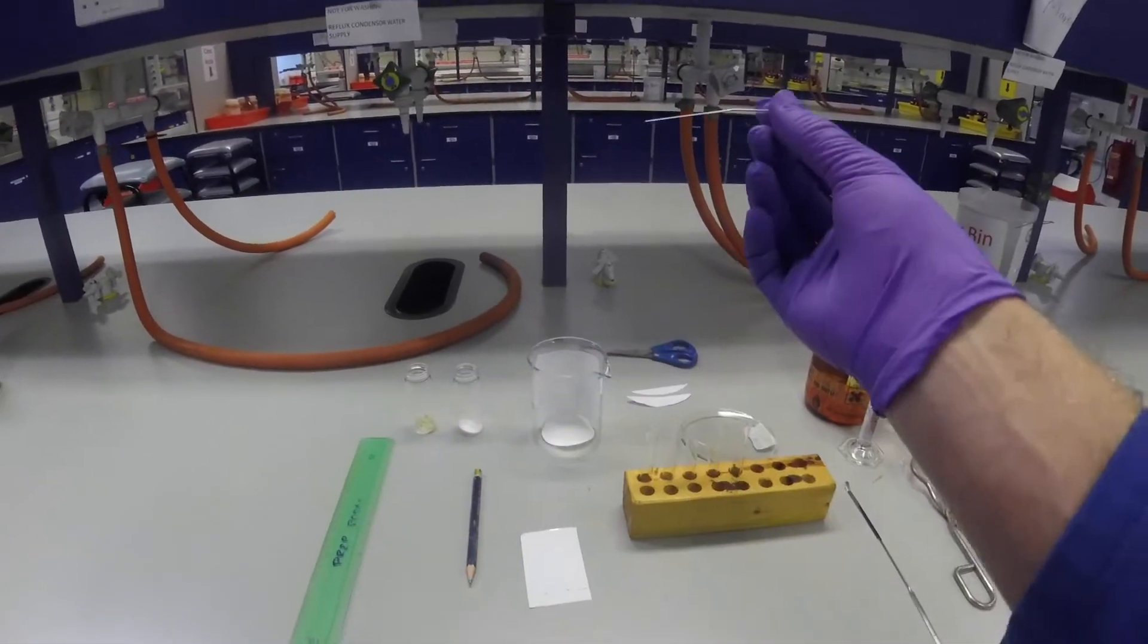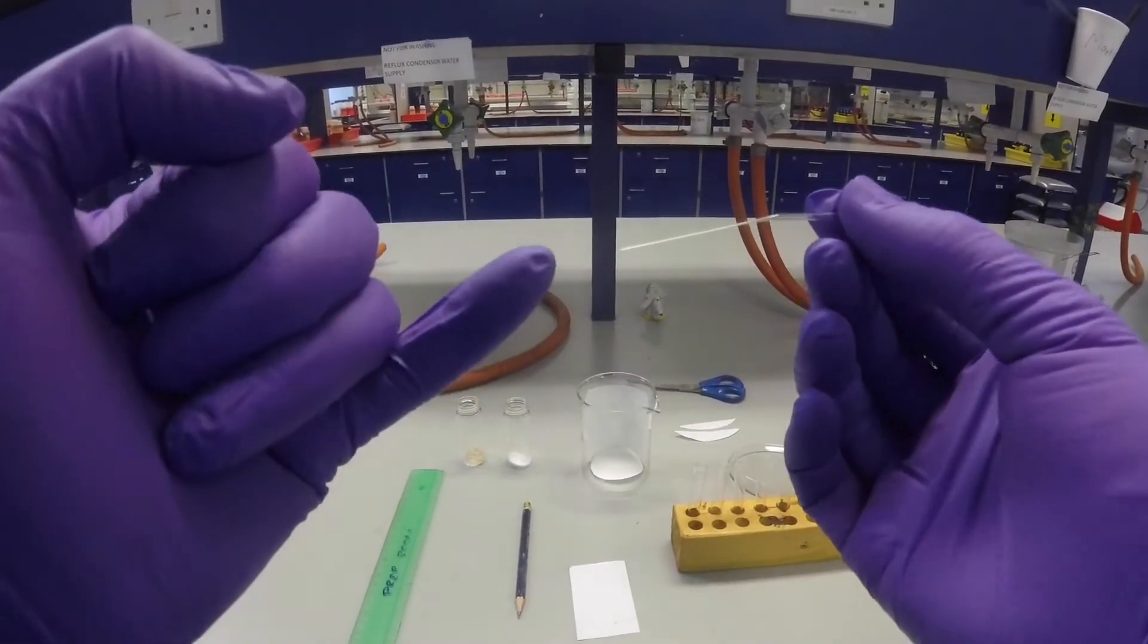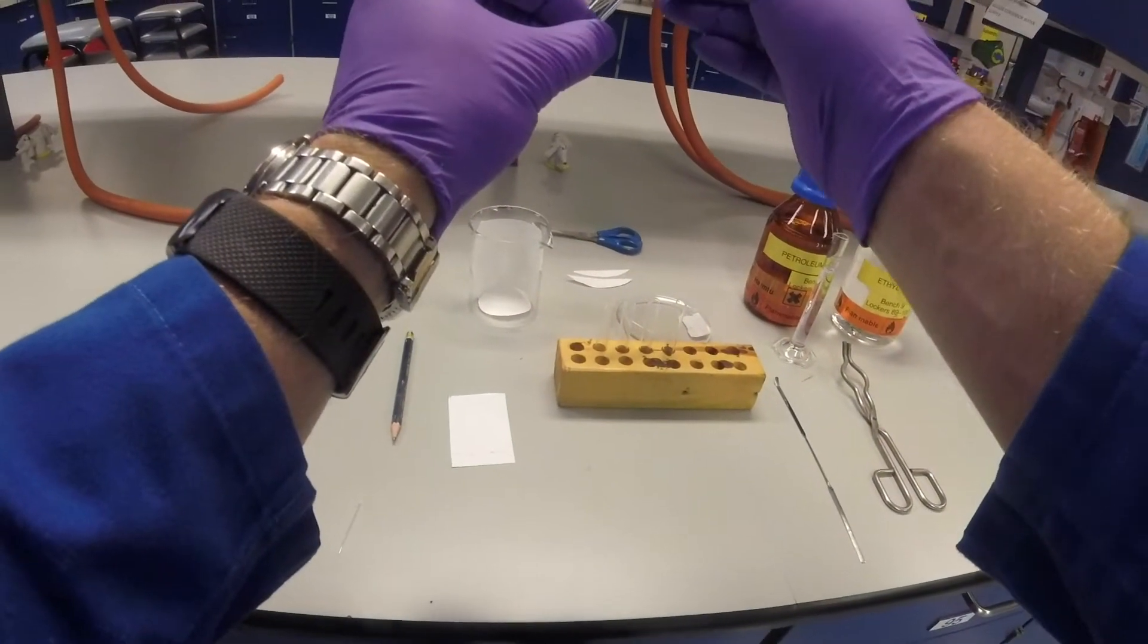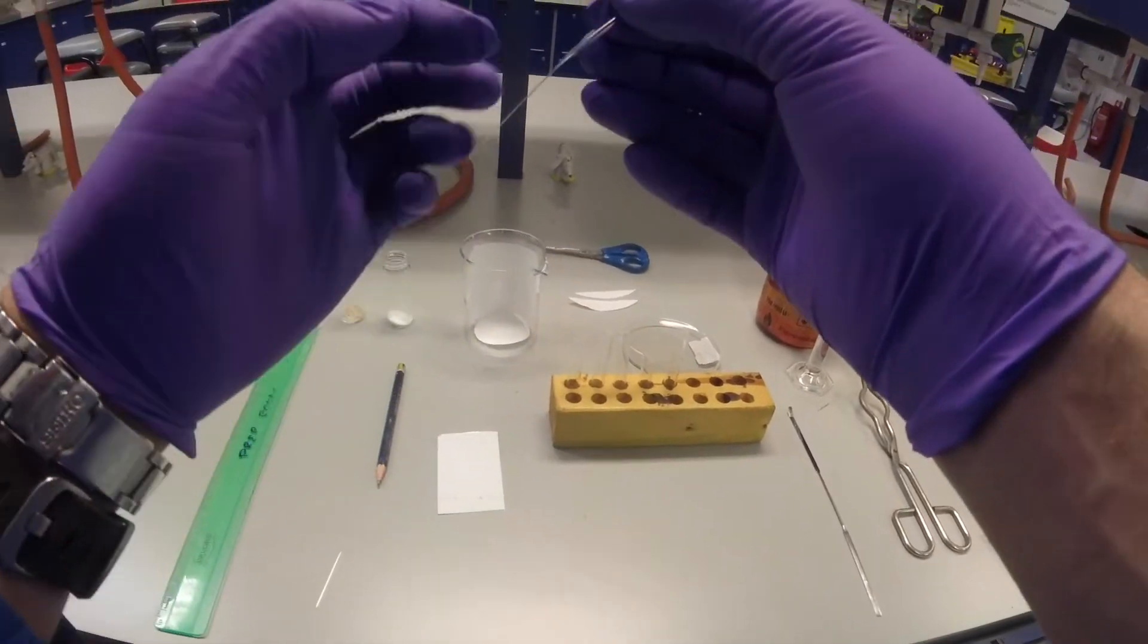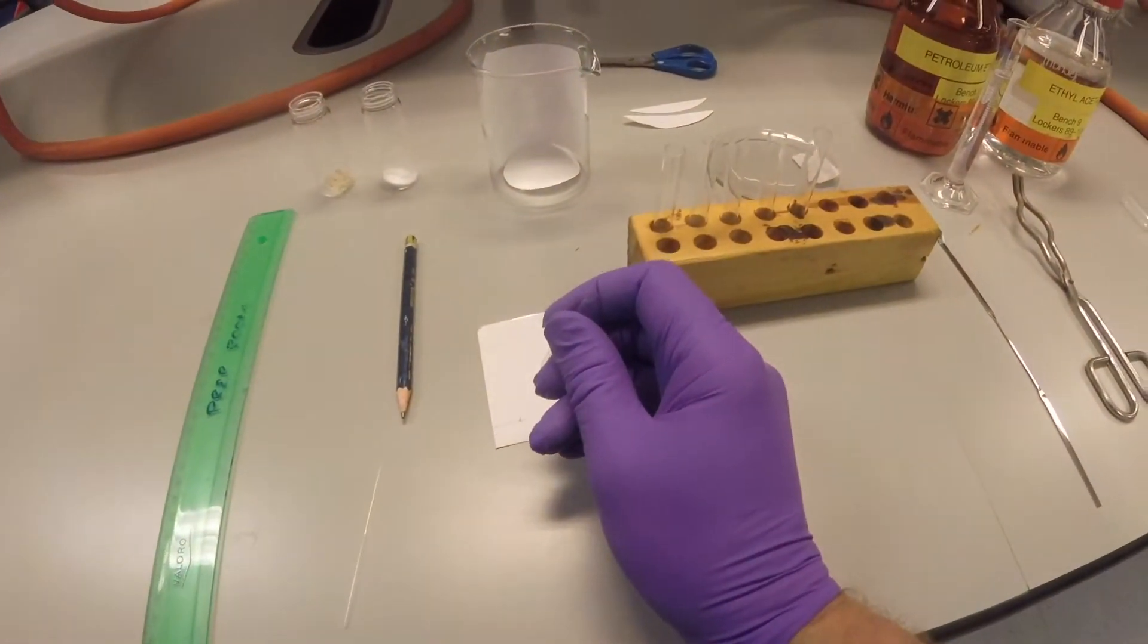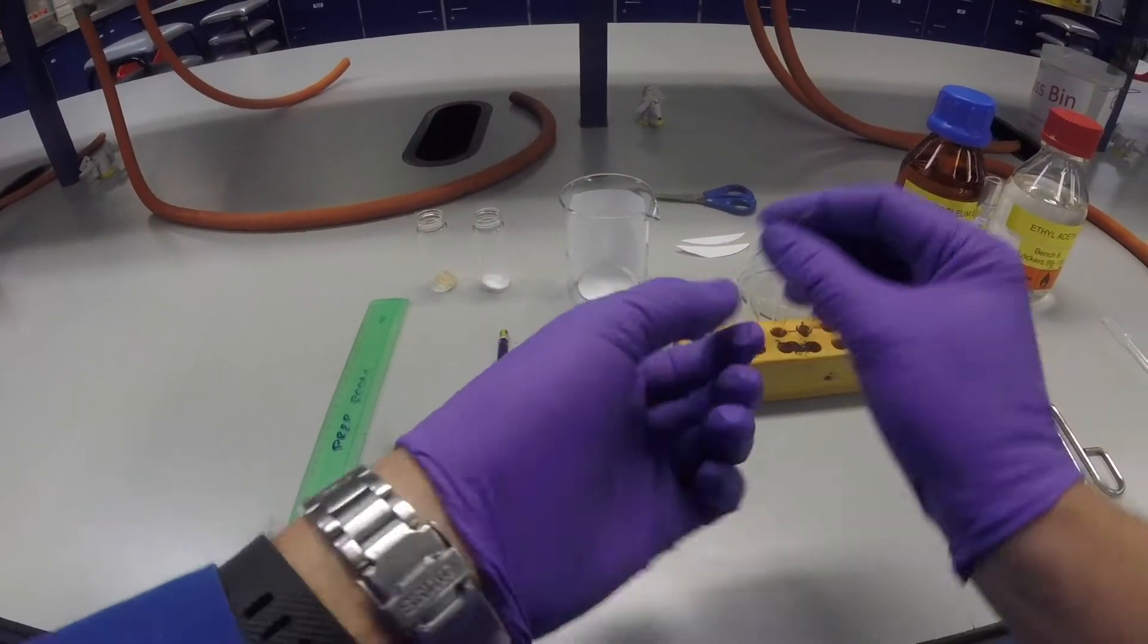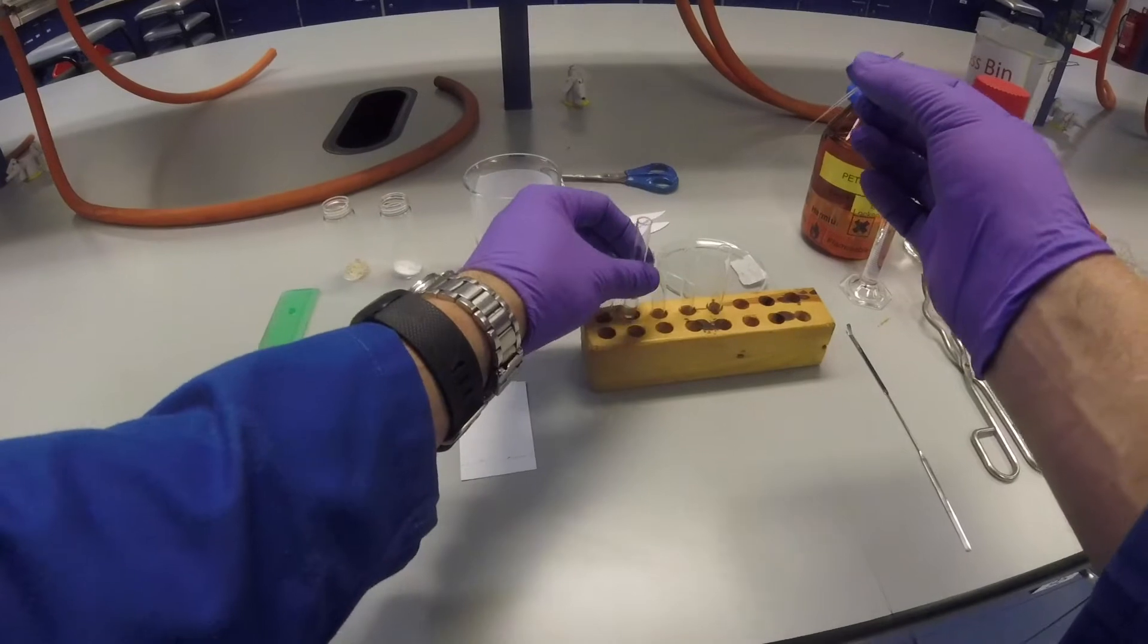We take our TLC spotters, a capillary tube that's been drawn out with a flame to make it much smaller with a very fine edge on the end. We dip it into our solvent and capillary action draws up the tube. Then you very carefully place that on the line where you've got one of the spots, allow the solvent to run out and form a spot there. That solution needs to evaporate, and your compound is loaded onto the TLC plate.